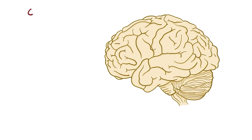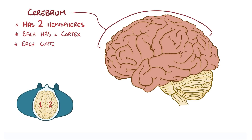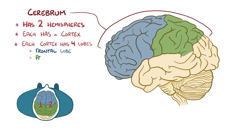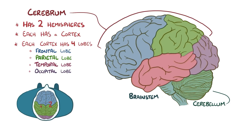The brain has a few regions. The most obvious is the cerebrum, which is divided into two cerebral hemispheres, each of which has a cortex — an outer region — divided into four lobes: the frontal lobe, the parietal lobe, the temporal lobe, and the occipital lobe. There are also additional structures including the cerebellum, which is down below, as well as the brain stem, which connects to the spinal cord.